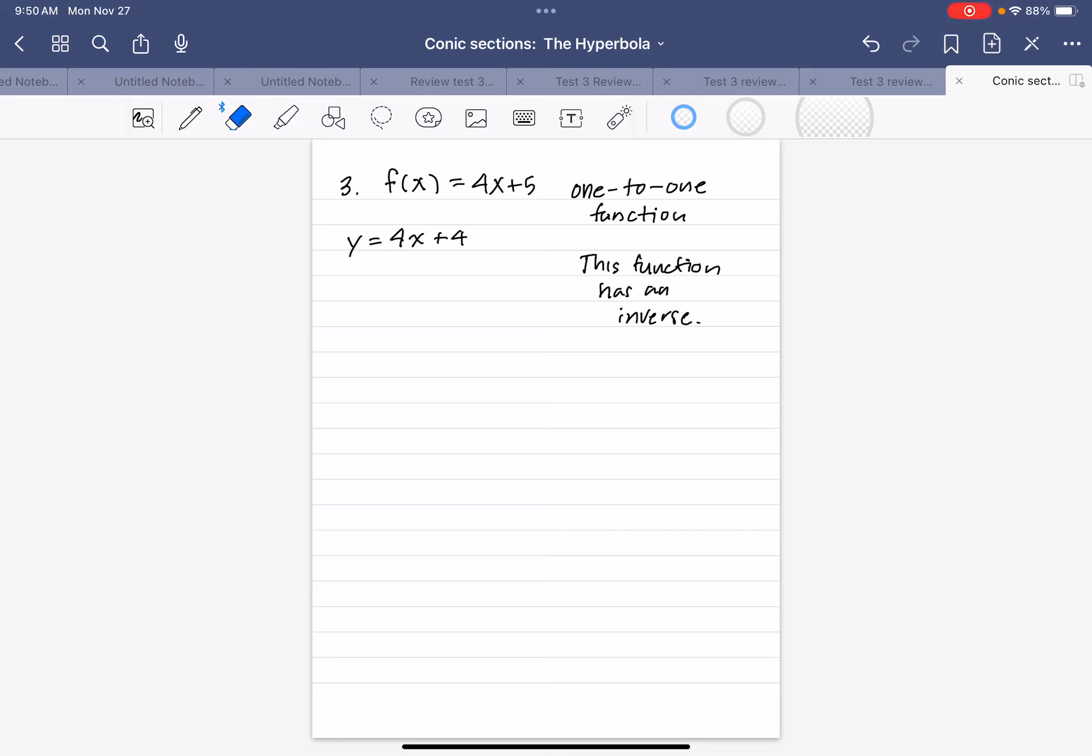We have a function f(x) = 4x + 5, and they tell us it's a one-to-one function, which means this function has an inverse.